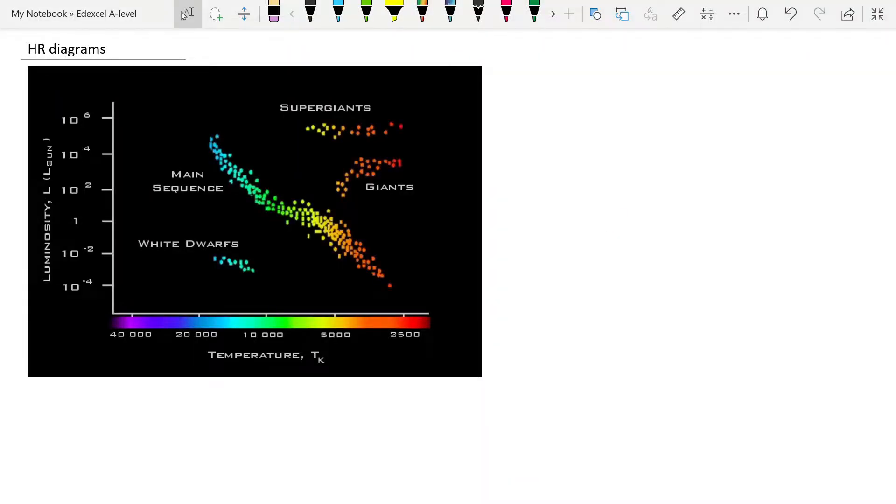We continue with our exploration of the size of the universe and looking at distances and luminosities of stars with the Hertzsprung-Russell diagram, also known as HR diagrams. But let's summarize first of all what we know already, and if you haven't watched the previous videos I do encourage you to go back and watch them.